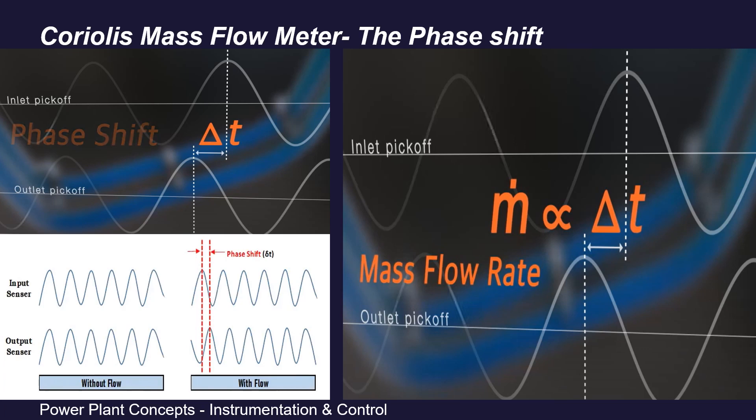The time delay measured between the two sine waves is in microseconds and is called delta T (ΔT). This delta T is directly proportional to the mass flow rate. The greater the delta T created by the Coriolis forces, the greater is the mass flow rate.